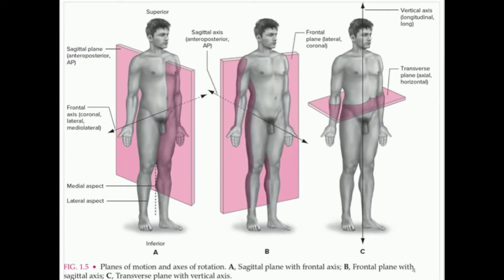Now let's look at some planes of motion. We have three important planes. The first is the sagittal plane, which separates the body into left and right halves. For example, the mid-sagittal plane right through the midline separates the two kidneys, the two lungs, and any paired structure — left and right. Any part of the body we have two of, a sagittal plane separates them.